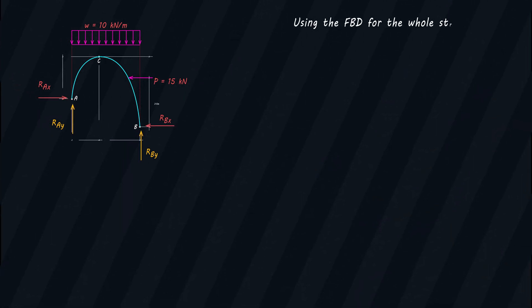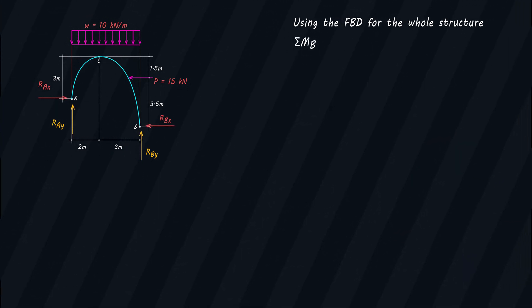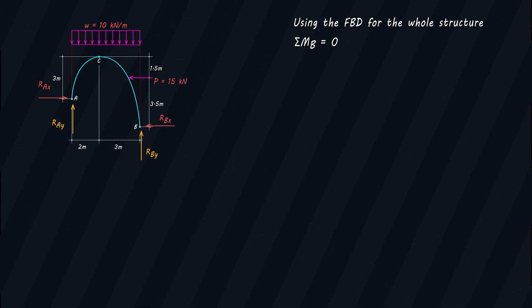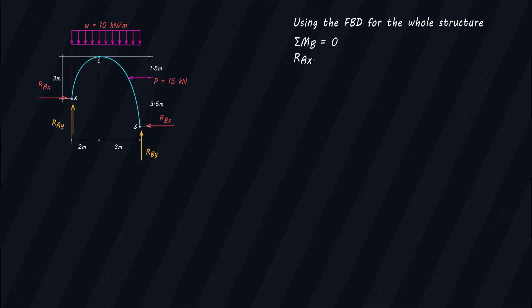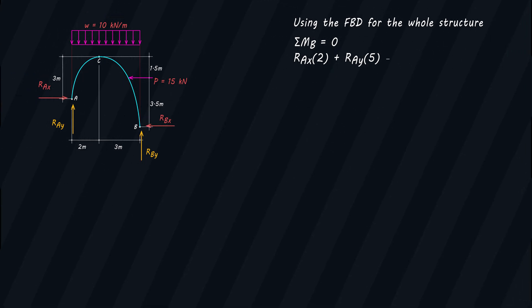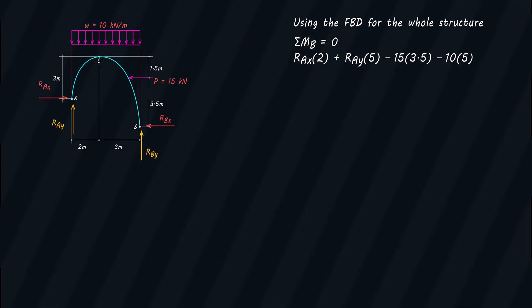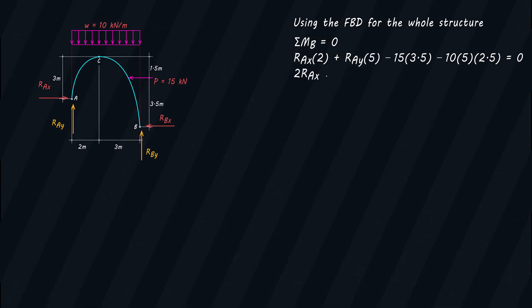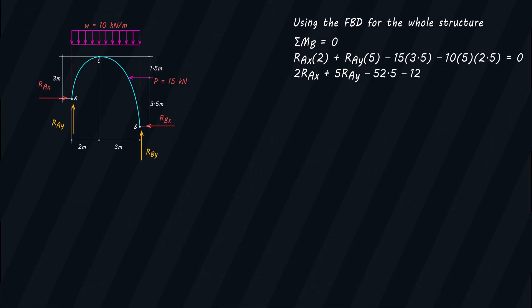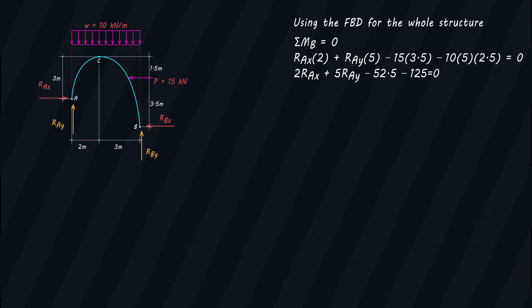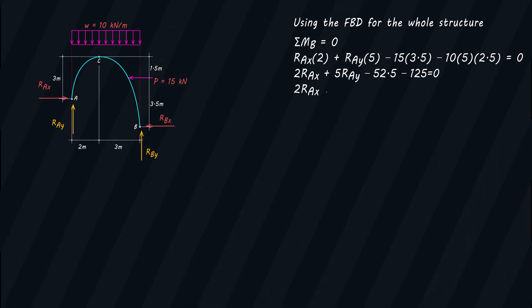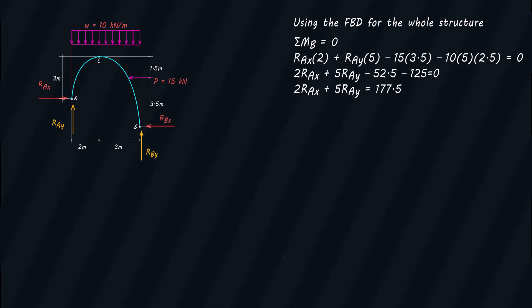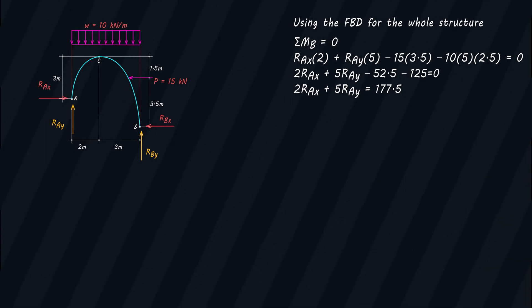Using the free body diagram for the whole structure, we'll get the sum of moments at point B. Since the structure should be in a state of equilibrium, the summation of moments at point B is equal to zero. Taking clockwise moment as positive, we have: RAX times 2 plus RAY times 5 minus 15 times 3.5 minus 10 times 5 times 0.5 equals 0. Simplifying: 2RAX plus 5RAY minus 52.5 minus 125 equals 0, giving us 2RAX plus 5RAY equals 177.5. Note that this equation has two unknowns, so we cannot solve it just yet.